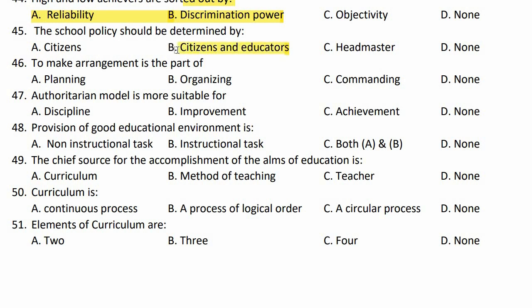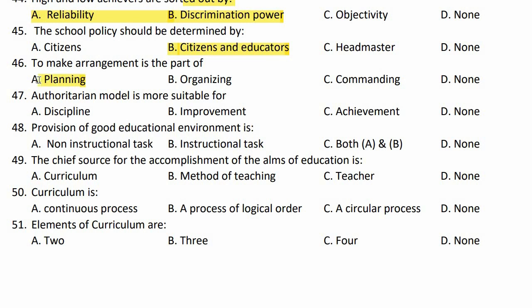The CIPP model is most suitable for: recipient, improvement, achievement, or none of these. The right option is for a recipient — improvement.